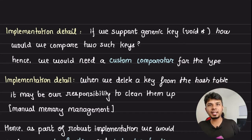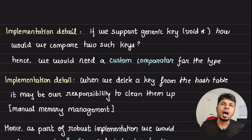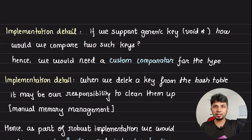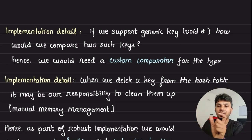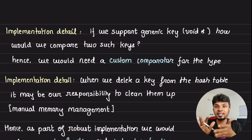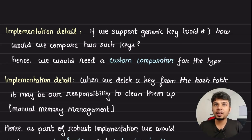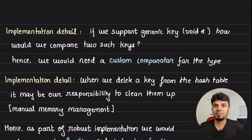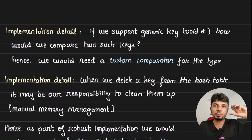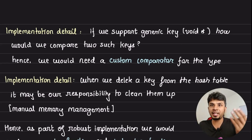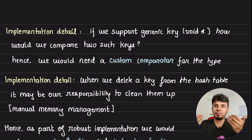Since we're supporting a generic key type (void*), how do we compare two keys? When you get a hash value, go to that location, and there might be some other key that hashed to the same location — how do you know it's the exact key you want? Even after reaching the location in the hash table, we need to do a key comparison. This is where we need to accept a custom key comparator function when setting up a hash map. This comparator takes two void pointers, and it's the responsibility of the application developer to pass it — not the hash map implementation itself.